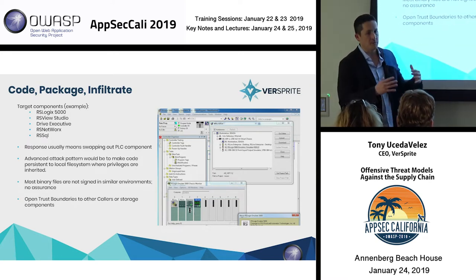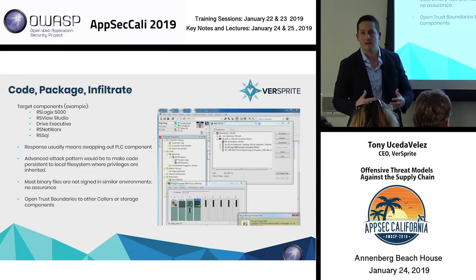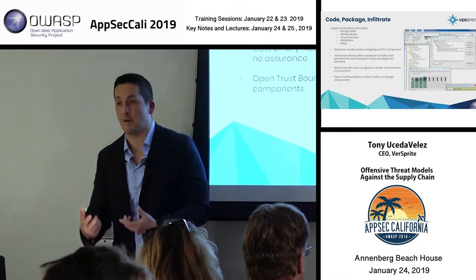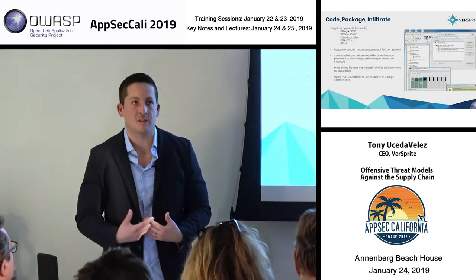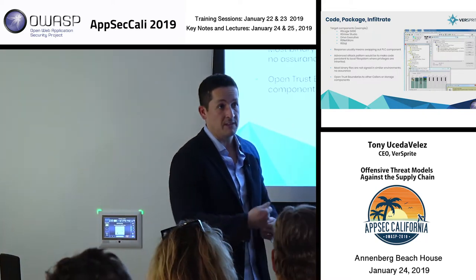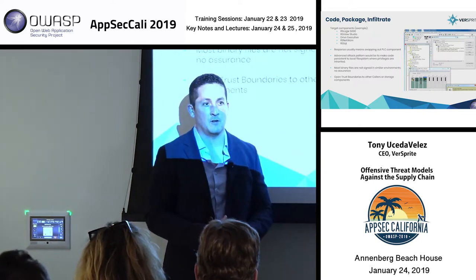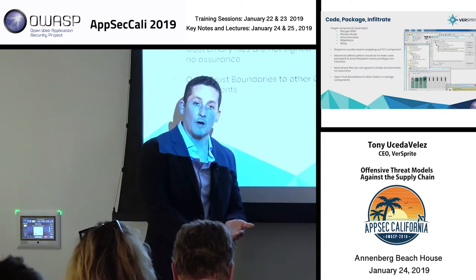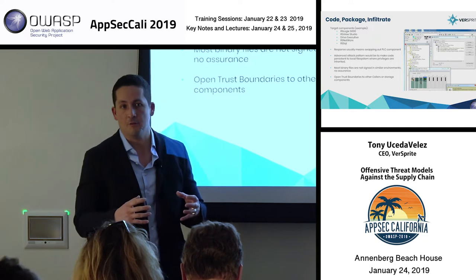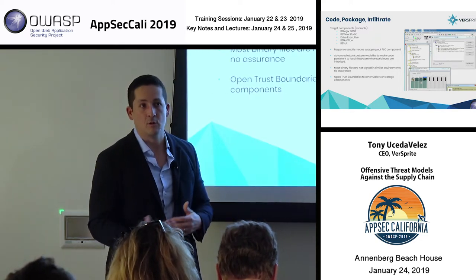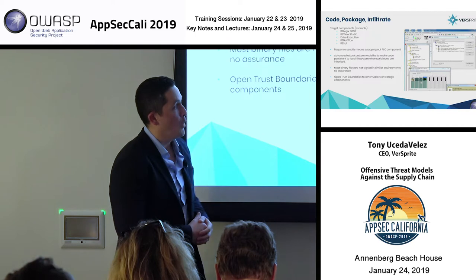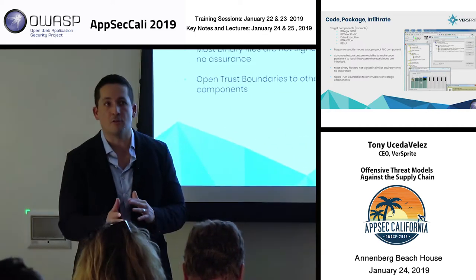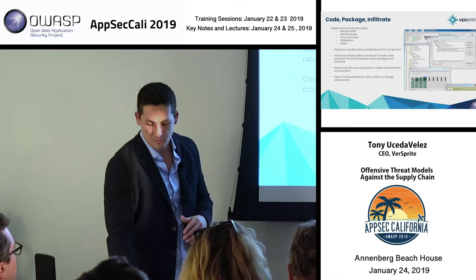From a supply chain standpoint, the city of Atlanta has systems that do imaging for driver's licenses and manage ticket information for parking fines. There's all this different software, hardware, and code off the shelf being consumed by an entity like the city of Atlanta. In this USPS case, we're talking about very simplistic code that is doing certain operations in order to control the function of some of those large machines.